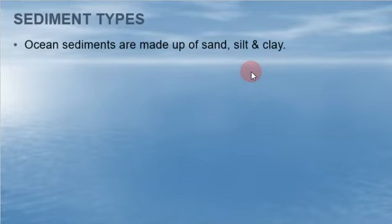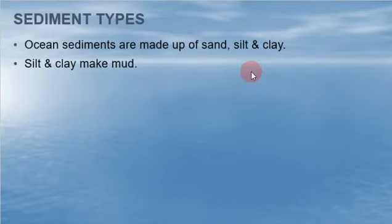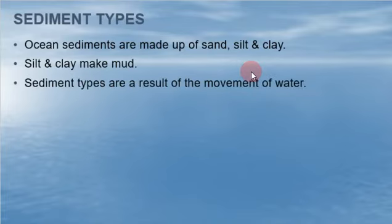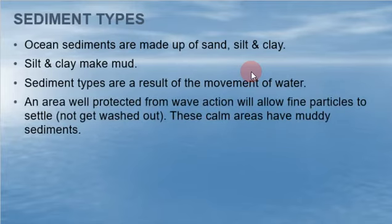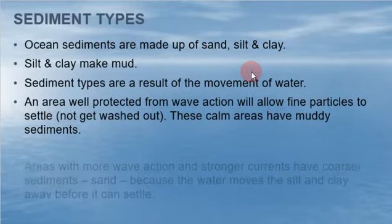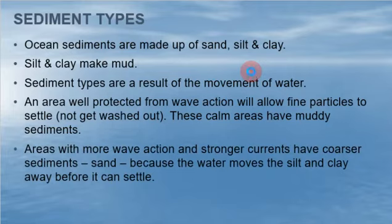Sediment types: ocean sediments are made up of sand, silt, and clay. Silt and clay make mud. Sediment types are the result of the movement of water. An area well protected from wave action will allow fine particles to settle — those are usually muddy, like the bay area, and also usually a little bit stinky. Areas with more wave action and stronger currents have a coarser sediment — that would be sand — because the water moves the silt and clay away before it can settle.